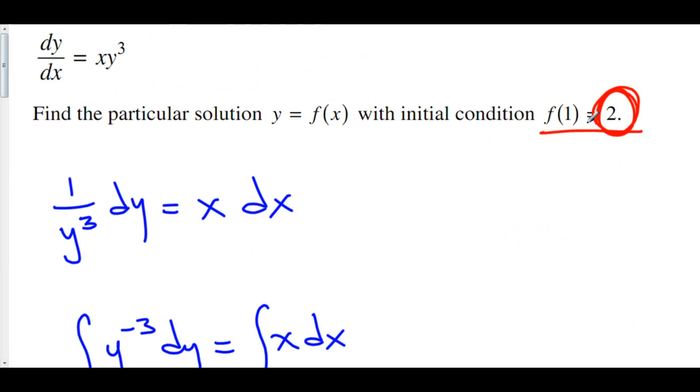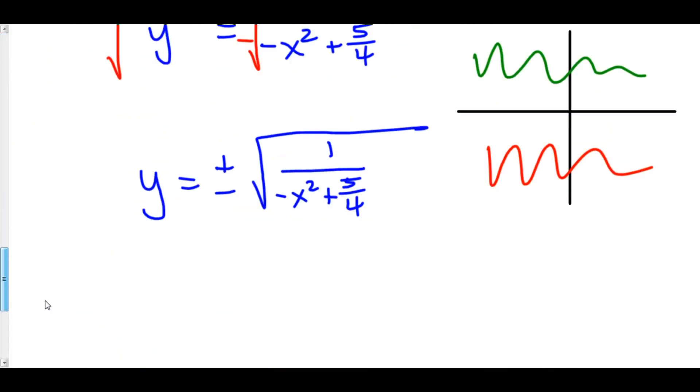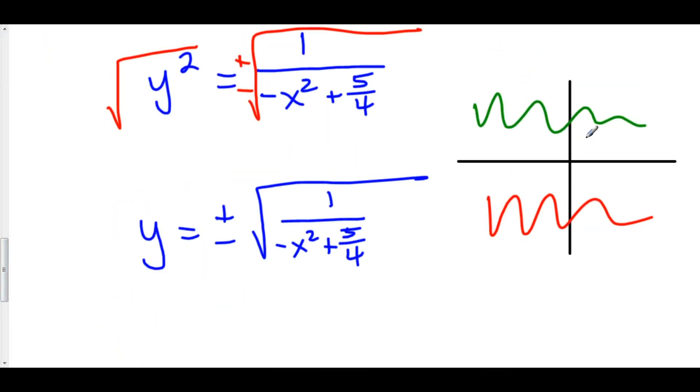You look at the initial condition. Here, the initial condition is that we have 1 comma 2. 1 comma 2 lies above the x axis. That means that we're looking at a particular solution that is above the x axis. So what this means is y is positive. And therefore the square root is also positive.